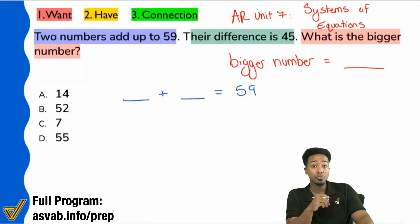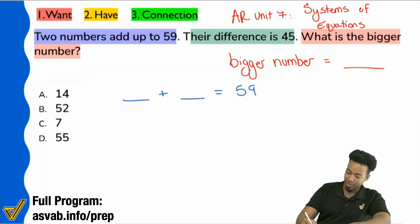Okay. The other sentence in green. The next sentence right here in green. Their difference is 45. Everyone, what does the word difference mean? We have to understand that. What does the word difference mean? Landon, thank you. Yeah, difference meaning subtraction.